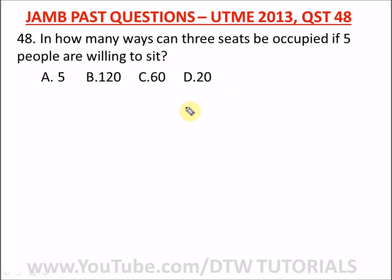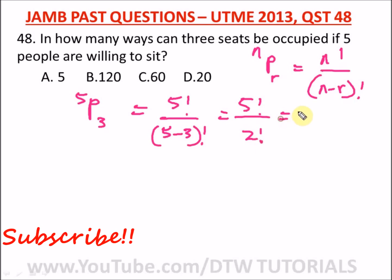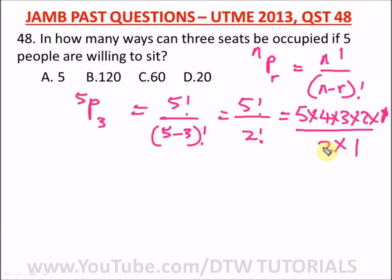Our next question is from JAM 2013 question 48: arrange five people on three seats. We are permuting five objects taken three at a time. Using the formula n factorial over (n minus r) factorial, we get five factorial over (five minus three) factorial, which is five factorial over two factorial. This gives us five times four times three, which equals 60. The correct option is option C.